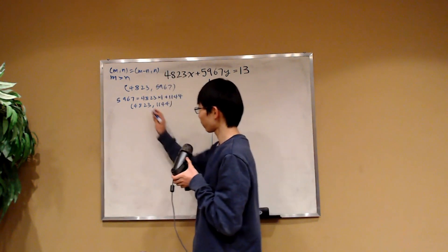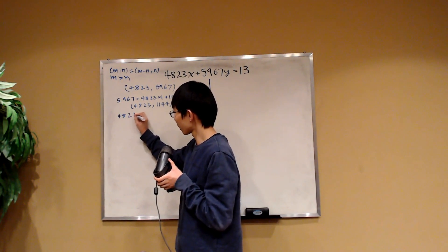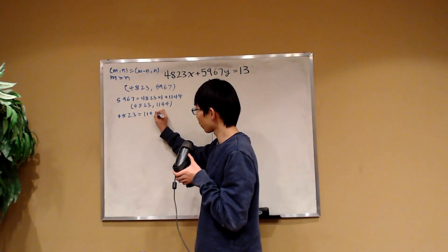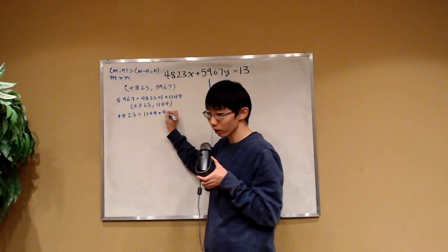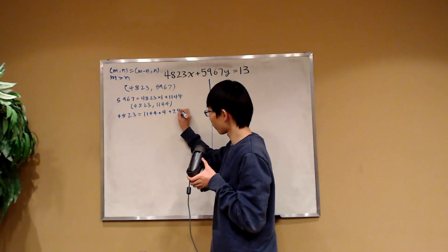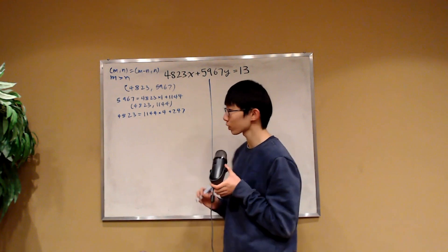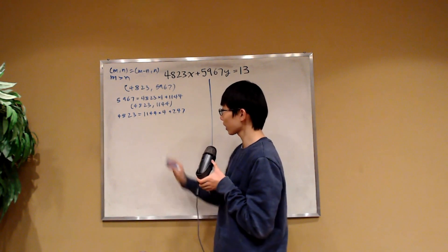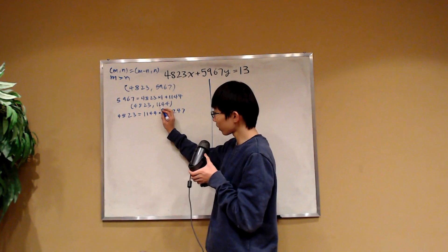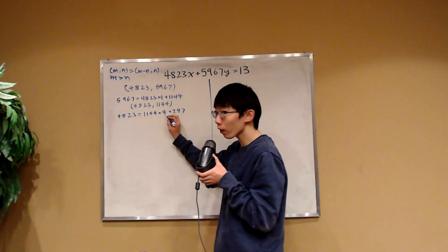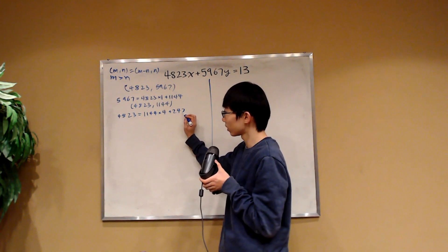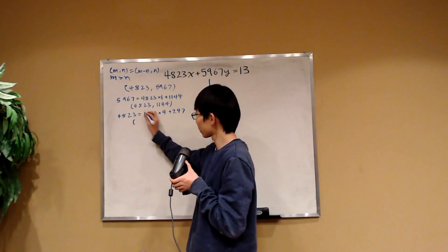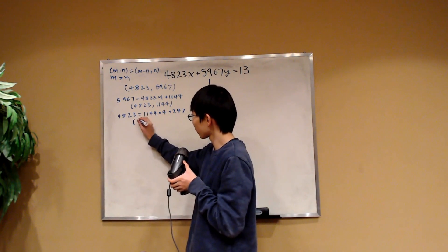Now observe that 4,823 equals 1,144 times 4 plus 247. This means we can subtract 4,823 by 1,144 four times until we get 247, something less than 1,144. So by the Euclidean algorithm again, we get the greatest common factor of 247 and 1,144.